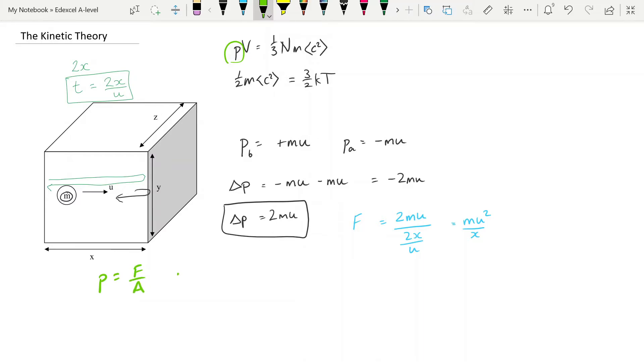So we take our mu² over x, which is our expression for force, and we divide that by the area of the shaded face, which of course is y times z, giving us mu² over xyz. And of course xyz is the volume of our container. So we end up with pressure is equal to mu² over V.